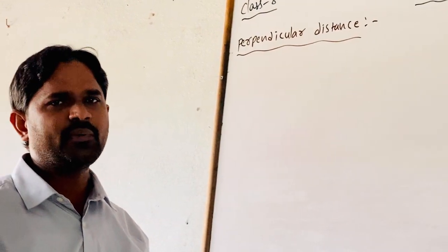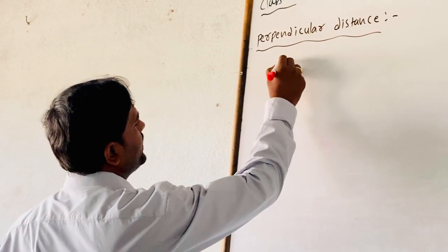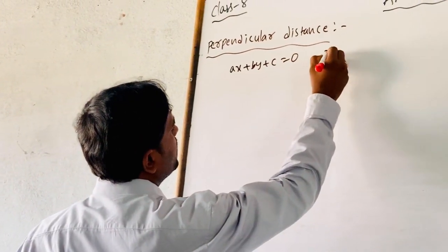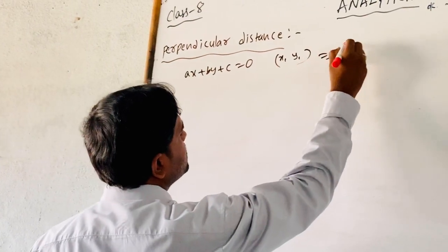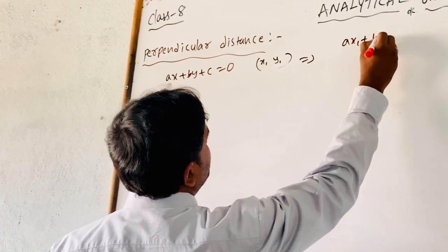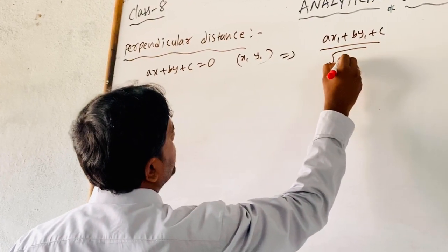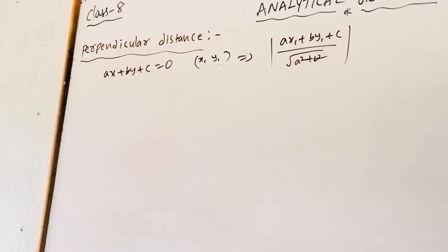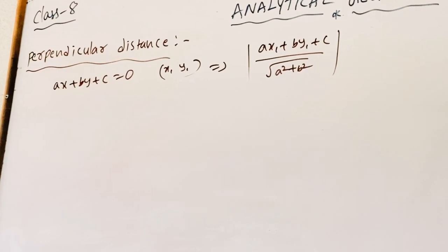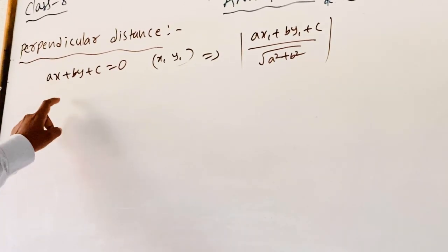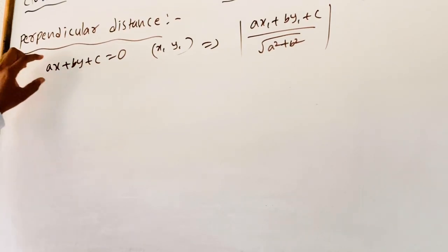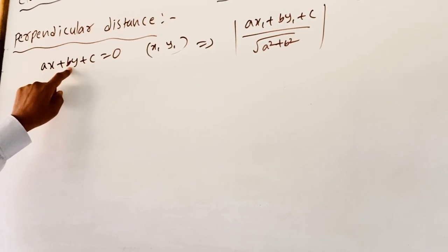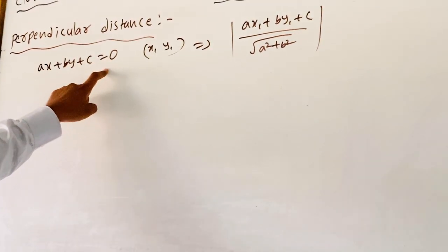How to find the perpendicular distance from a point to a line. Given a line AX plus BY plus C equals 0, the perpendicular distance from point (X1, Y1) gives us: AX1 plus BY1 plus C, divided by square root of A squared plus B squared. We wrote this condition at the time of normal form of a line: X cos alpha plus Y sin alpha equals P, which is the standard form.